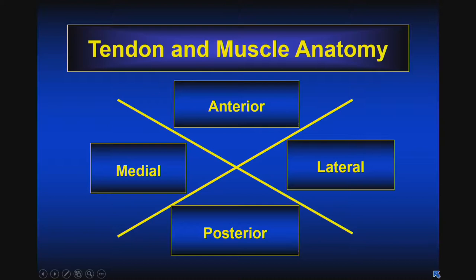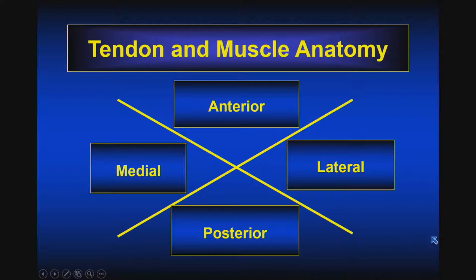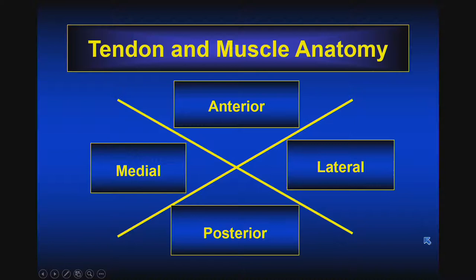As we consider our discussion of the tendons about the elbow, and as you consider evaluating any articulation, I think it's nice to have a system — a bookkeeping system — to think about all of these different anatomic structures and details that we have to keep track of. With regard to the elbow and tendon anatomy pathology, a bookkeeping system that lends itself well is regional, dividing things into anterior, posterior, medial, and lateral, or radial and ulnar if you prefer that nomenclature.